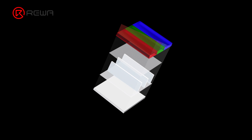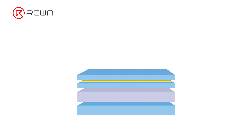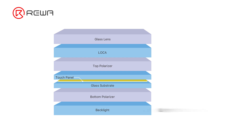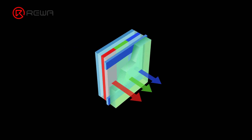LCD, or liquid crystal display, works by emitting light from a backlight and filtering light to display images. The main structures of LCD are backlight, glass substrate, touch panel, and polarizer. The backlight is the light source, the glass substrate determines the transmittance, the position of the touch panel affects the touch stability, and the polarizer decides if the screen supports all angles.